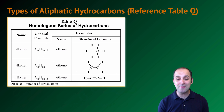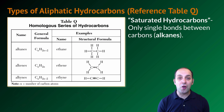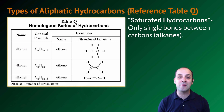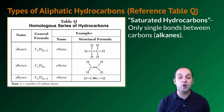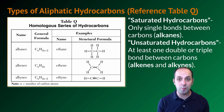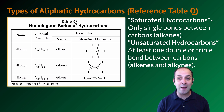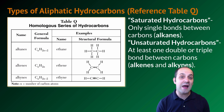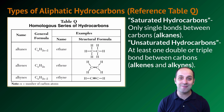We have saturated hydrocarbons, where carbons are connected to each other only by single bonds — every remaining bond is carbon to hydrogen. Then we have unsaturated hydrocarbons, where there is at least a double bond or a triple bond connecting the carbons. We could theoretically break those bonds and add more hydrogens to make them saturated. The saturated hydrocarbons are called alkanes, the unsaturated ones with a double bond are alkenes, and those with a triple bond are alkynes.